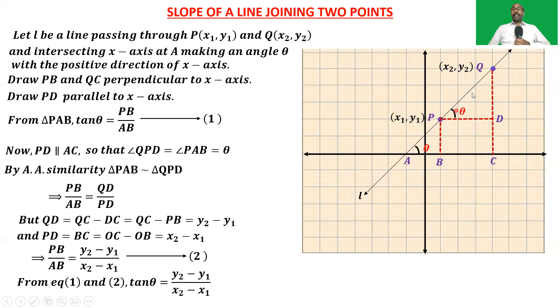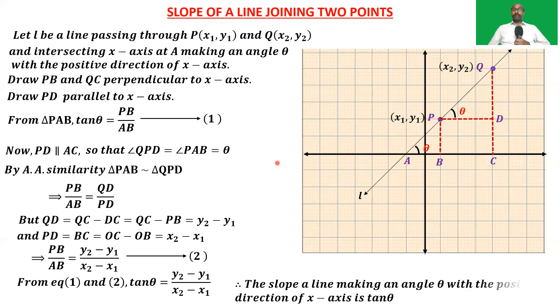So theta is the angle made by the line with the positive direction of the x-axis. When we know the angle theta made by a line with the positive direction of the x-axis, the slope of the line is tan θ. The slope of a line making an angle theta with the positive direction of the x-axis is tan θ. Now let us solve the problems in Exercise 7.4 based on this concept.